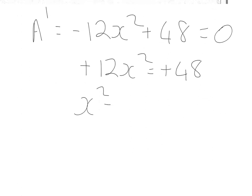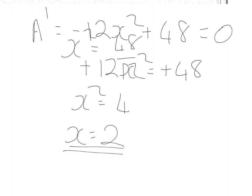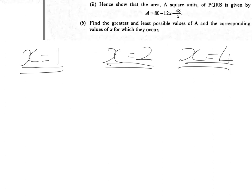x squared is equal to 48 over 12, which is 4, and take the square root, and x is equal to 2. I'm not going to take the negative result there, because it doesn't make sense in the context of the question, whereby I know that x is in the quadrant where x coordinates are positive. So, what I'm doing next is to investigate the area at the turning point, which is 2, and at the end points, which were 1 and 4. So, that's about subbing these into the area function.